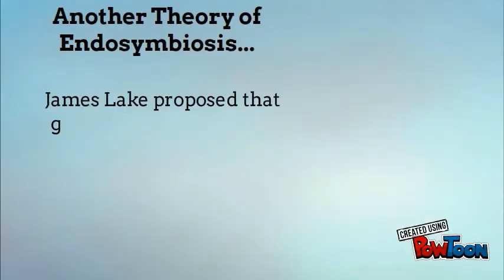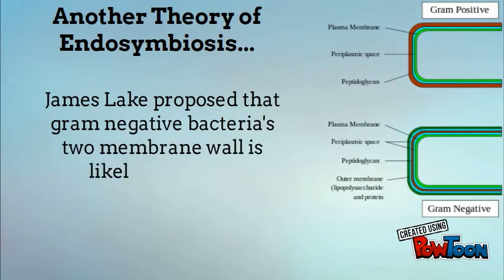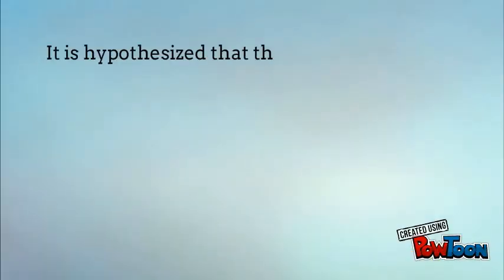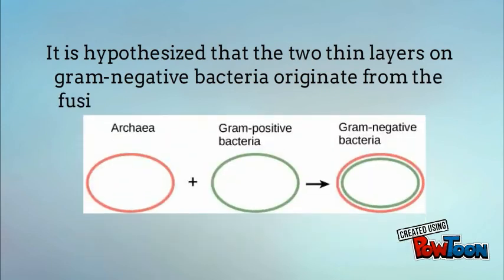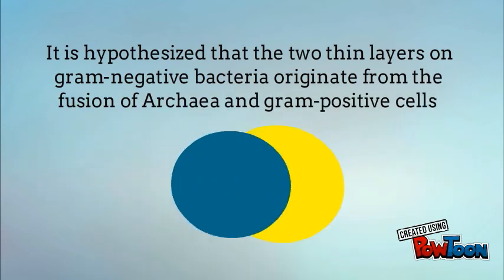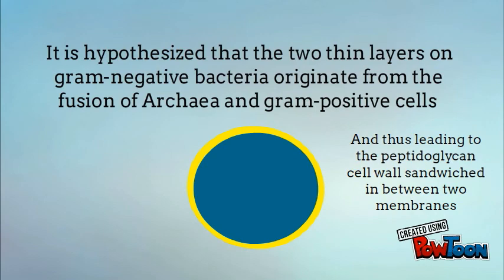Another theory of endosymbiosis: James Lake proposed that gram-negative bacteria's two-membrane wall is likely a result of endosymbiosis. It is hypothesized that the two thin layers on gram-negative bacteria originated from the fusion of archaea and gram-positive bacteria. That would give us the peptidoglycan cell wall between the two membranes.